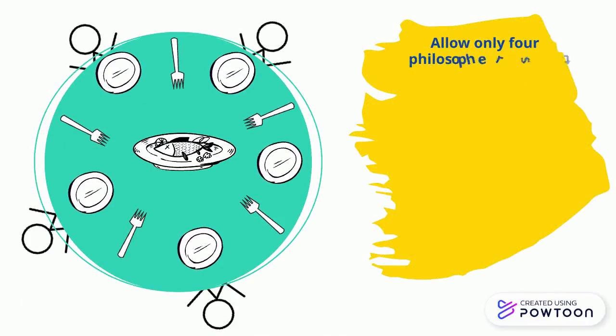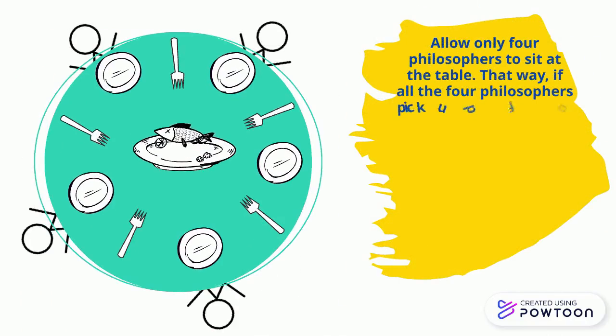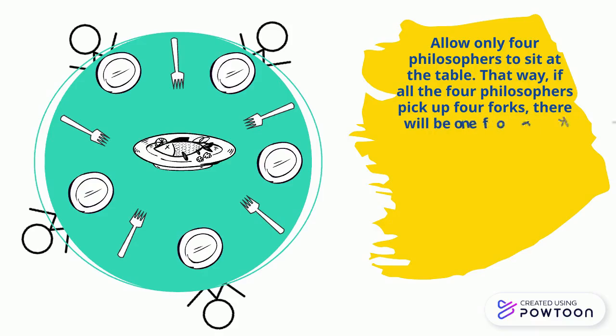Allow only 4 philosophers to sit at the table. That way, if all the 4 philosophers pick up 4 forks, there will be 1 fork left on the table.